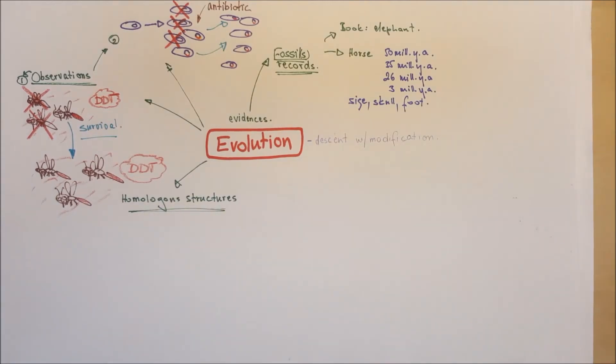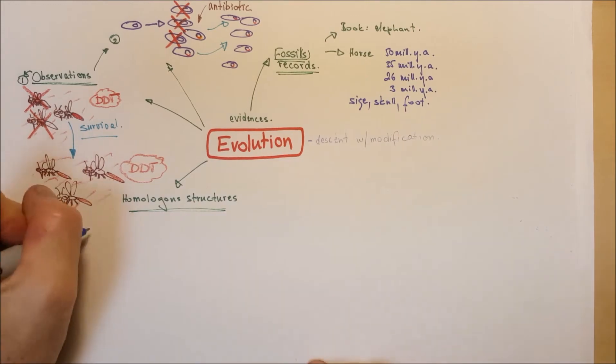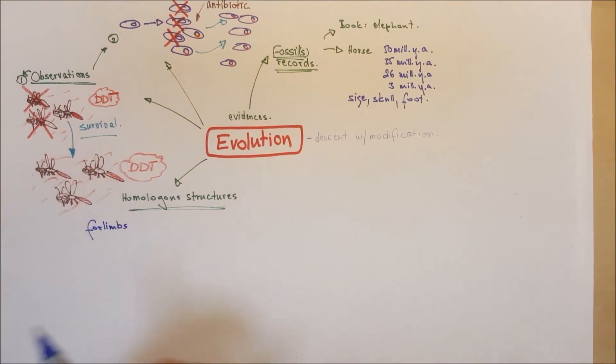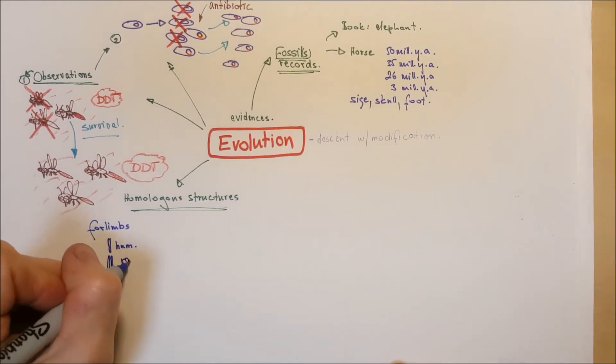Homologous structures are, for example, the forelimbs. And the forelimbs for the mammals contain the humerus, the most proximal, the ulna, and the radius, the carpal bones, metacarpals, and the phalanges.